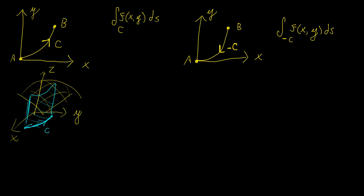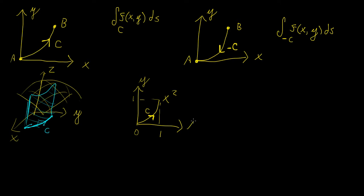So how do we show that? Let's do a simple example. Let's suppose we have some curve — a simple function, x squared, all the way from 0 to 1. So this is going to be our curve C, and we're now going to integrate it in this direction and also in the opposite direction, and compare the two results to see if we indeed get the exact same answer. So we're going to start with the orientation going from point A to point B.